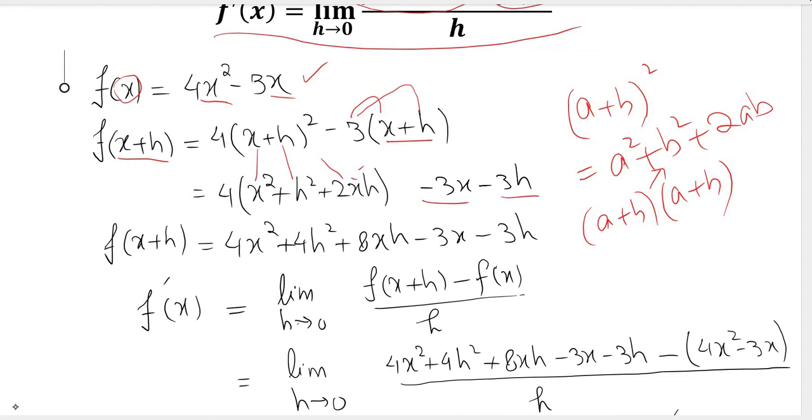Now this 4 would multiply to all three terms, so 4x squared plus 4h squared plus 8xh, and these two would come again as is.